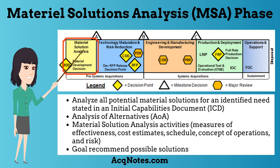The first phase is the material solutions analysis phase, or what I call the MSA phase. The purpose of the MSA phase is to analyze all potential material solutions for an identified need stated in an initial capabilities document. The phase consists of an analysis of alternatives and material solution analysis activities, to include measures of effectiveness, cost estimates, schedule, the concept of operations, and risk. The goal of this phase is to recommend possible solutions for further exploration in the technology maturation and risk reduction phase.